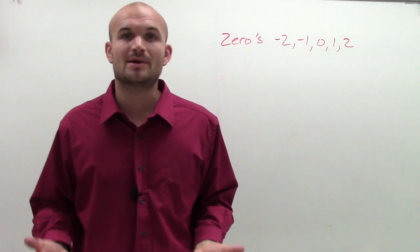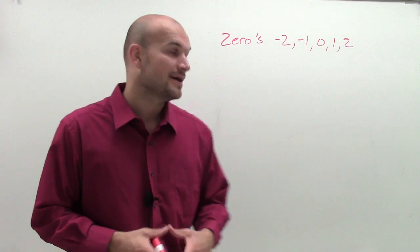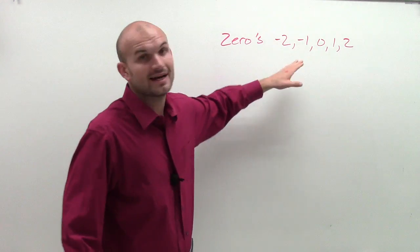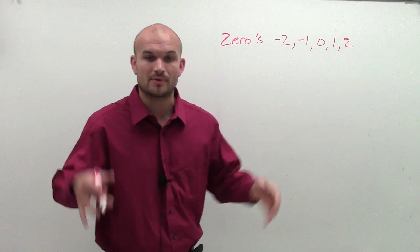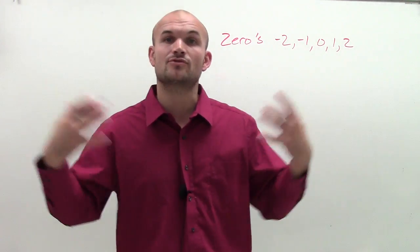And if you remember when we're talking about the zeros, the zeros are the same thing as our x-intercepts. And what we do to find our zeros, when we do like a regular factoring problem, we have a polynomial, then we factor it, then we use the zero product property to write our zeros.